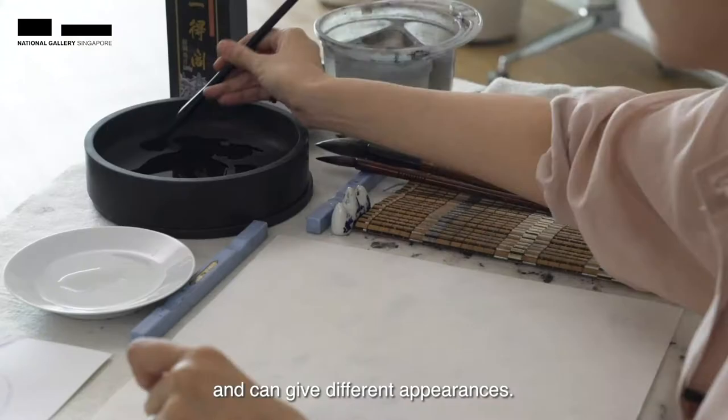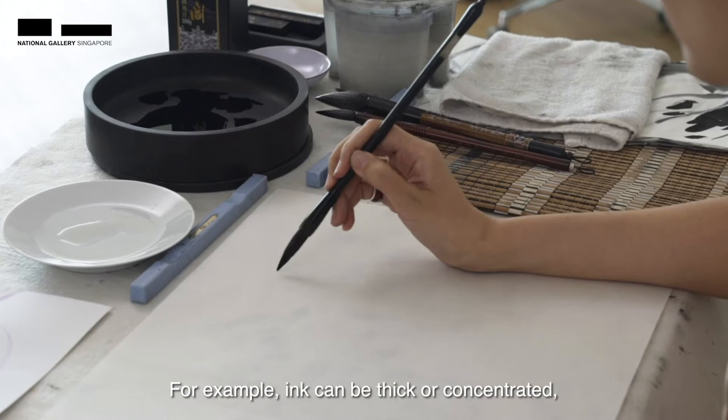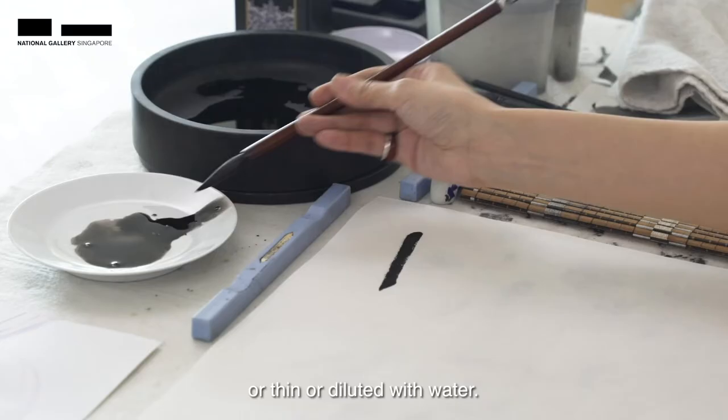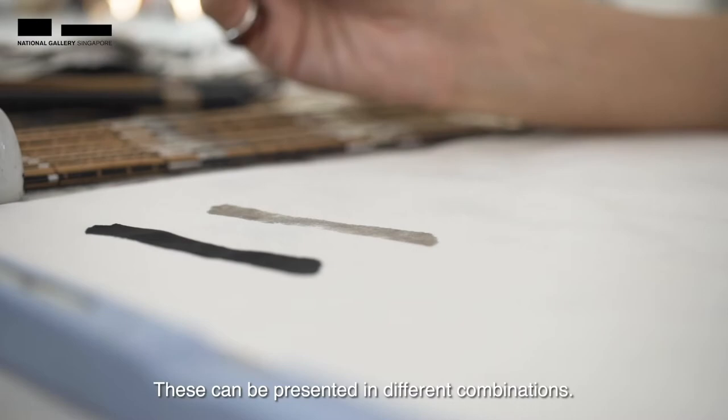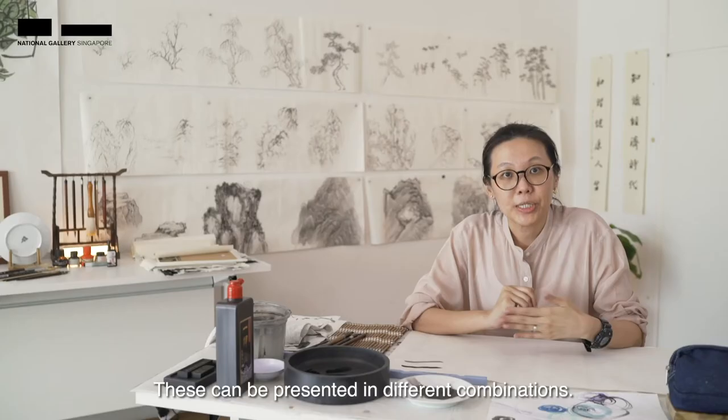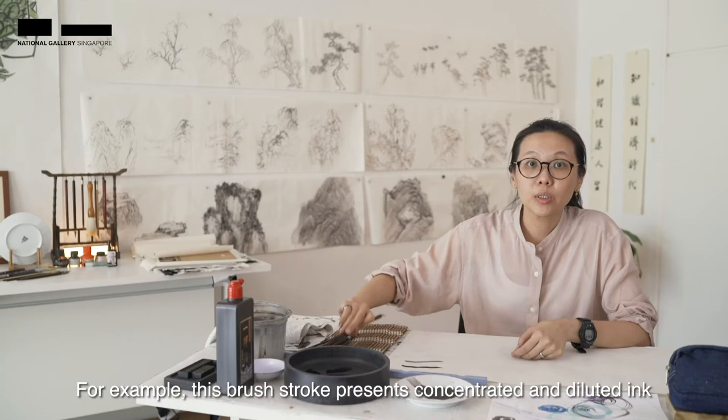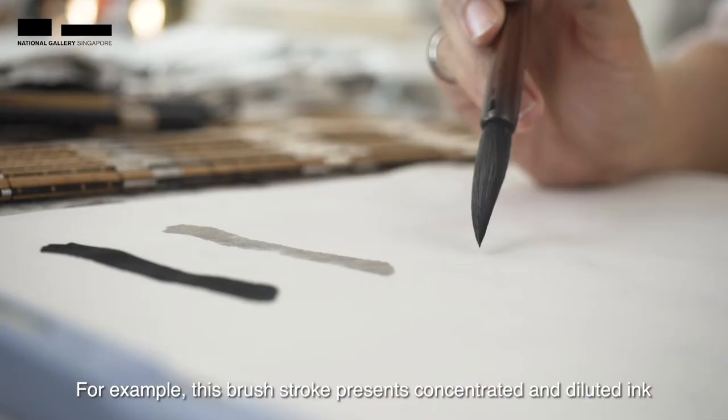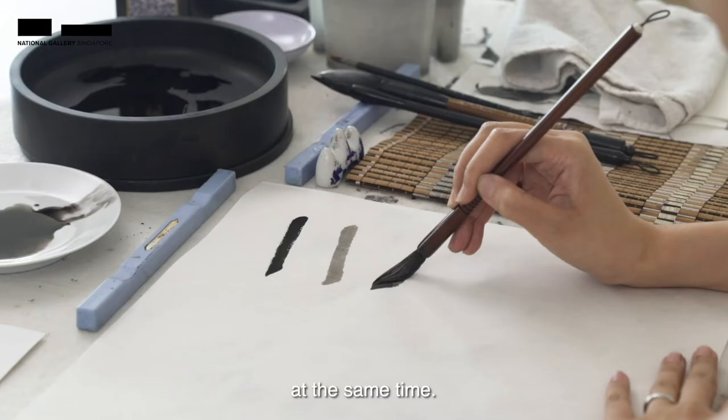For example, ink can be thick or concentrated or ink can also be thin or diluted with water. This can be presented in different combinations. For example, this brush stroke will present concentrated and diluted ink at the same time.